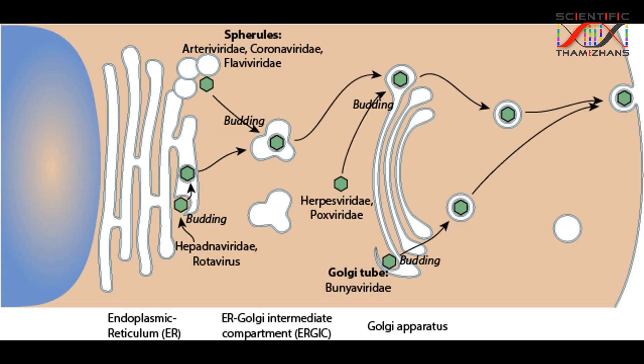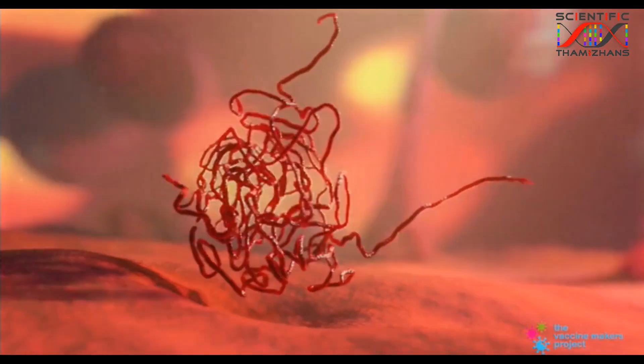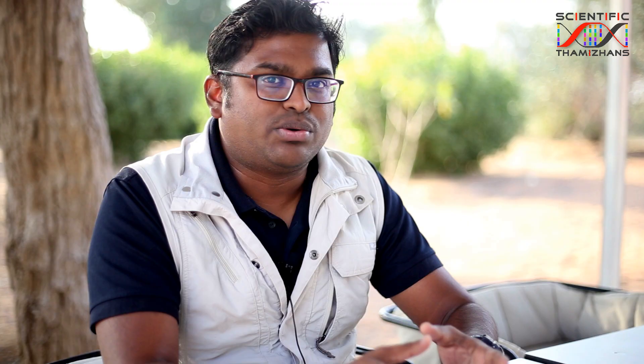These viral proteins are assembled in the Endoplasmic Reticulum and the Golgi apparatus. The intermediate area is known as the ERGIC, where protein assembly takes place. Now let us look at the genomic and genetic sequences.